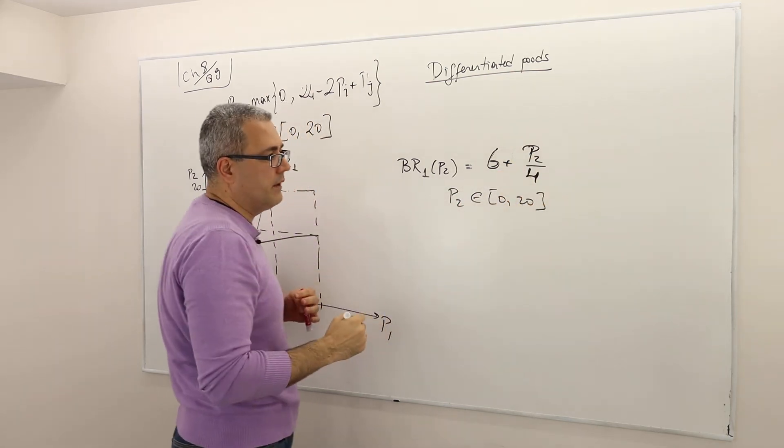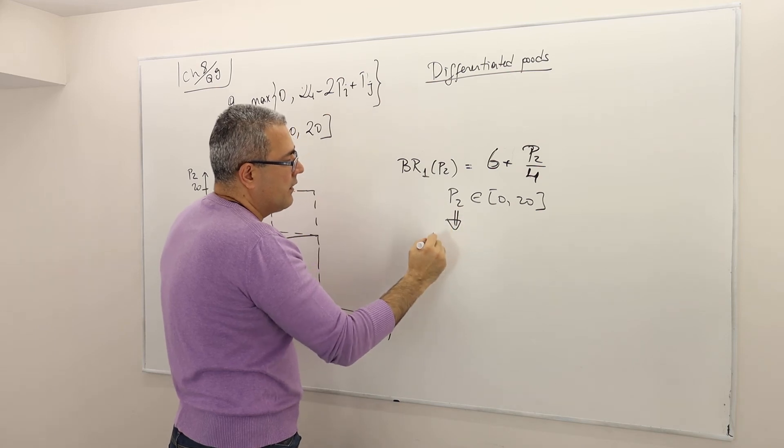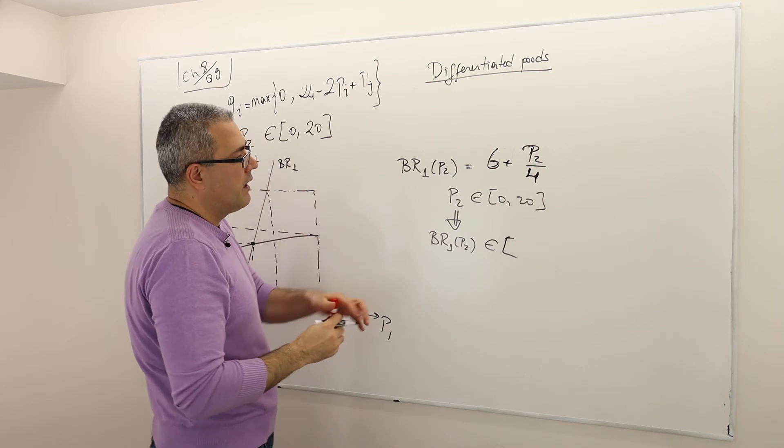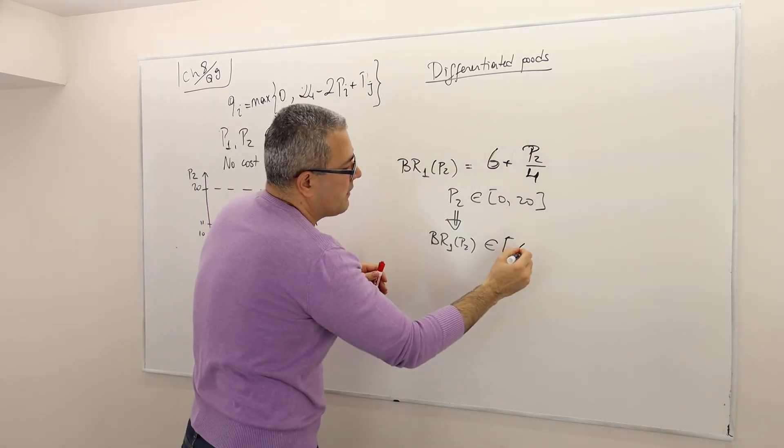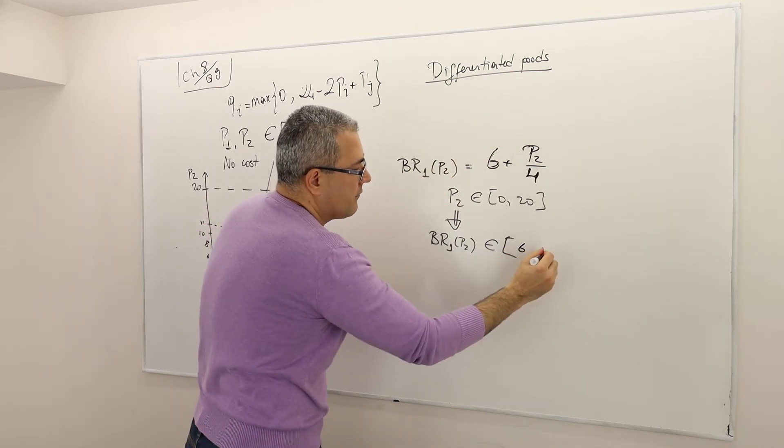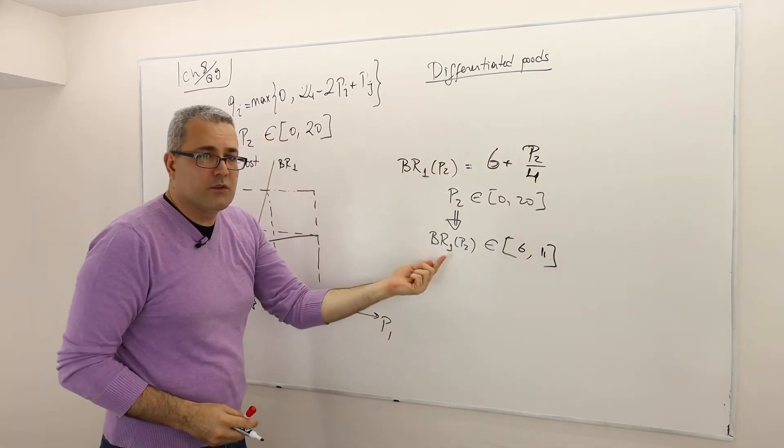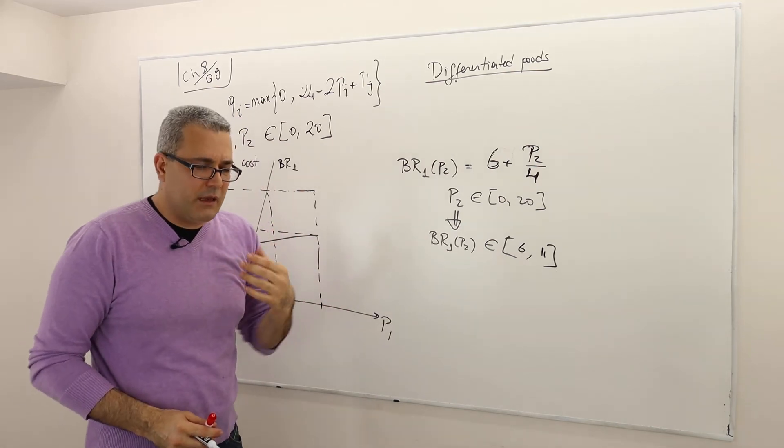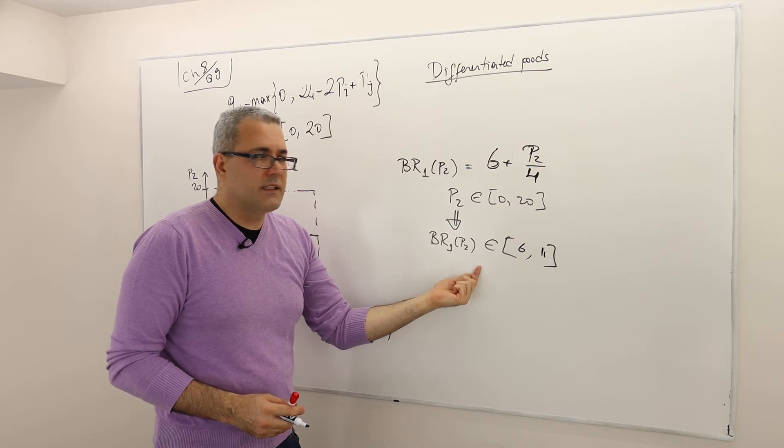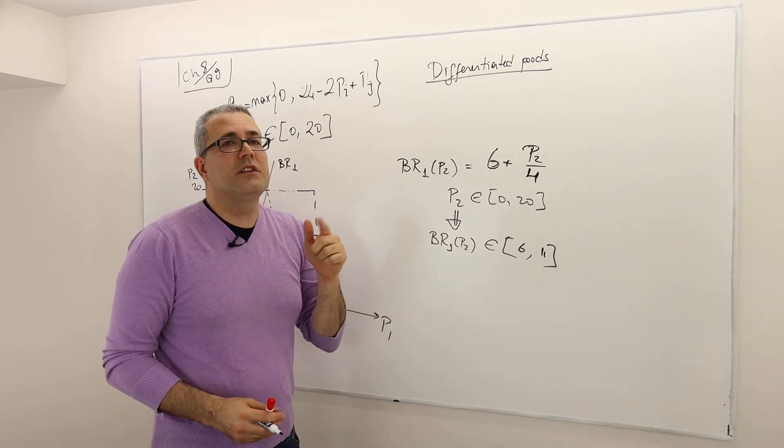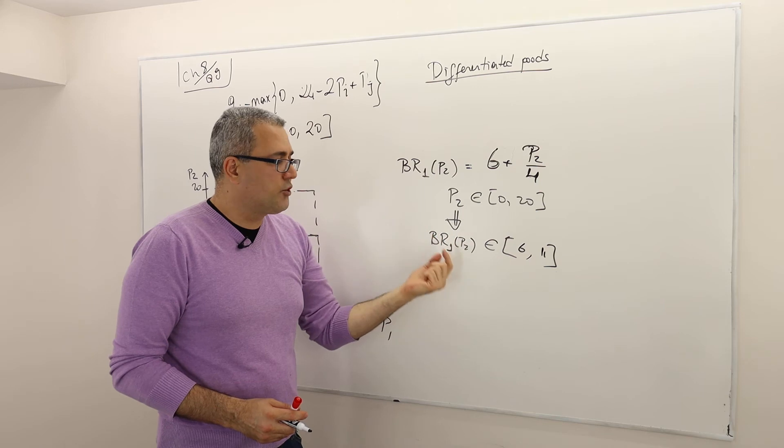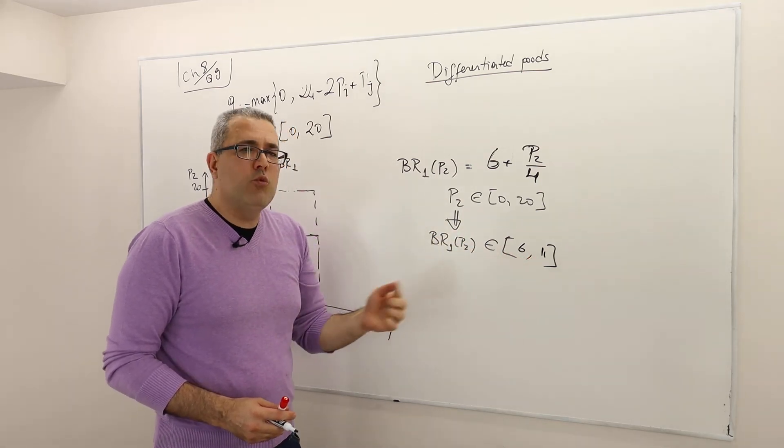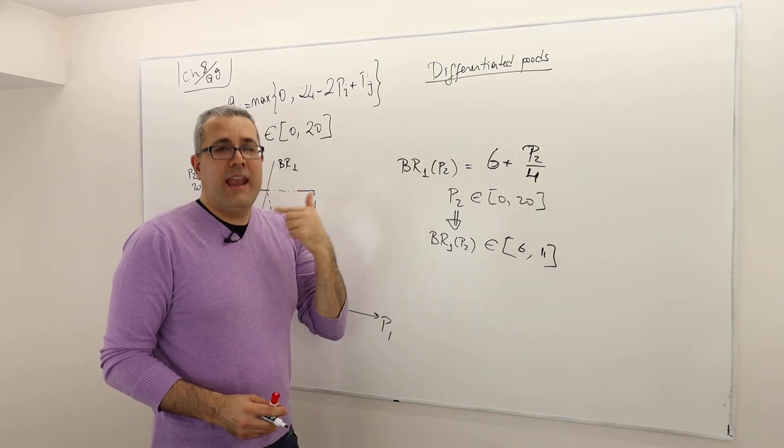So that means this best response thing is in between, right? So for 0, this thing is 6, for 20, this thing is 11. So the best response of the first player is always in between 6 and 11. What does that mean? That means the strategies less than 6, and the strategies for firm 1 that are less than 6, and the strategies for firm 1 that are more than 11, they will never be best response.